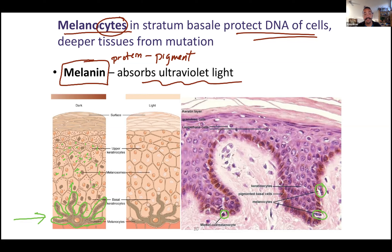You have melanocytes that are producing a certain amount of melanin. They release the melanin by exocytosis. It gets taken in by neighboring cells by endocytosis, and by having the pigment inside the cell, it can absorb light and protect your nuclei, protect your DNA.